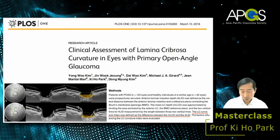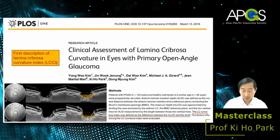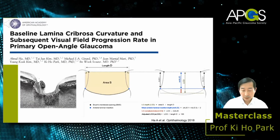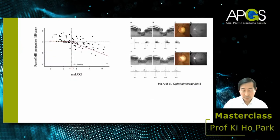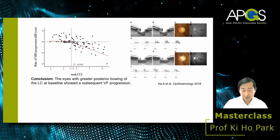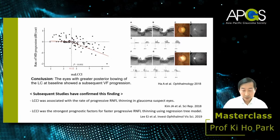Five years ago our group introduced the concept of the Lamina Cribrosa Curvature Index (LCCI), which reflects how much the lamina cribrosa is posteriorly bowed. The LCCI was calculated from the LC depth and anterior lamina insertion depth. The study found that eyes with greater posterior bowing of the LC at baseline showed subsequent visual field progression, and subsequent studies have confirmed this finding.